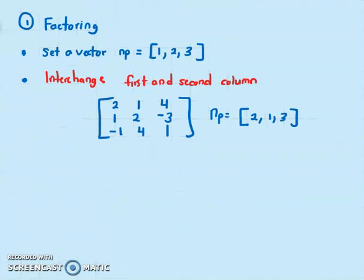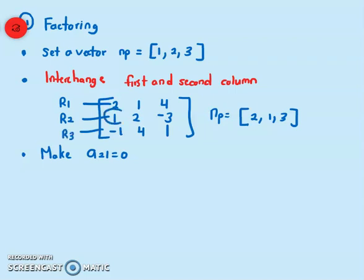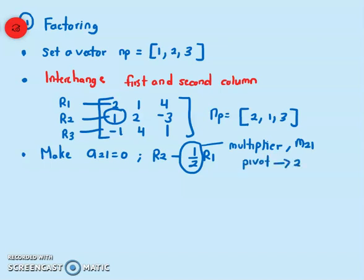Once this step is done, now what we need to do is to make A21 equals to 0. Exactly like how we did with the Gauss elimination video, how to make this part here 0. So I can say that R2 minus half of R1. Now the half here is called the multiplier. Let's put it M21. The denominator 2 here is called the pivot. So, the pivot is 2.